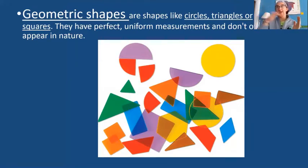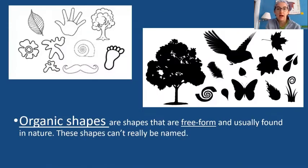Geometric shapes are like circles, triangles, squares. They have perfect uniform measures and they don't usually show up in nature because they are perfect and precise. You could take a ruler and measure each side of a square. You can use a special tool to measure a circle. We know exactly what our geometric shapes are.